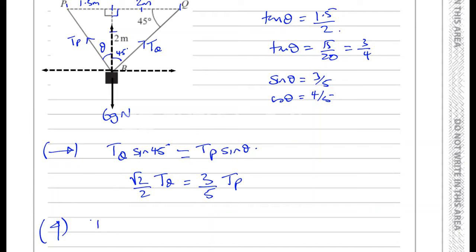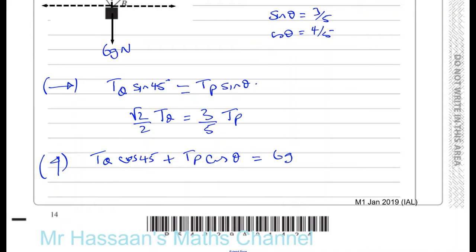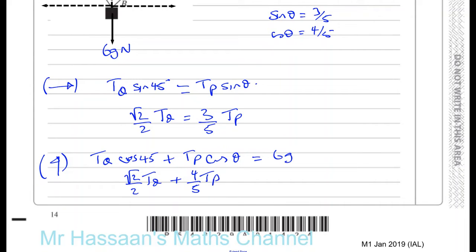Resolving forces vertically: TQ times cos 45 plus TP times cos θ equals 6g. So (√2/2)·TQ + (4/5)·TP = 6g. That gives us equation two.